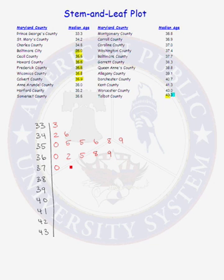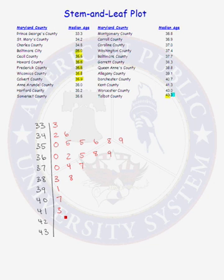We have a 37.0, 37.4, and a 37.7; then 38.3, 38.8, 39.1, 40.7, and 41.3. We do not have any median ages that begin with a stem of 42, so we just leave that leaf blank. Then we have a 43.0 and a 43.3.